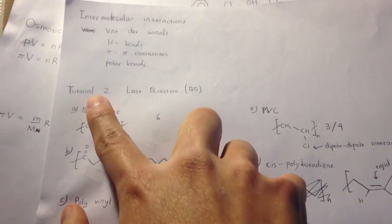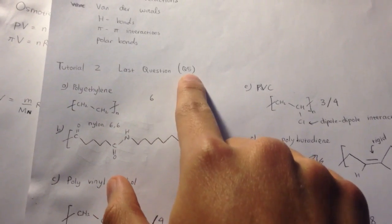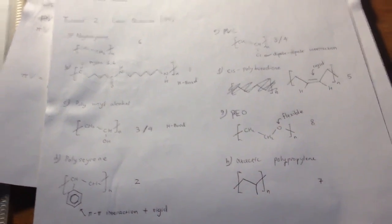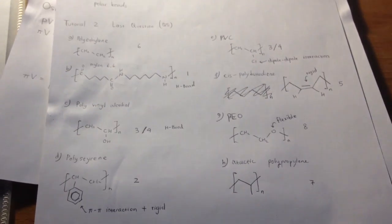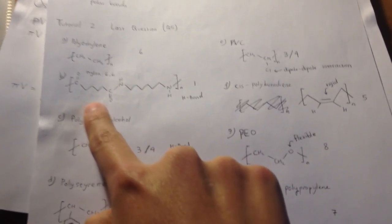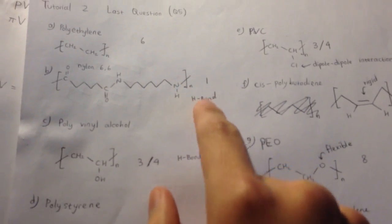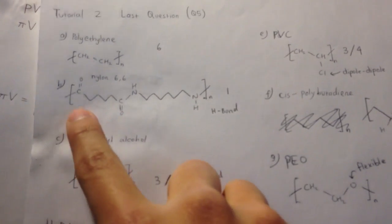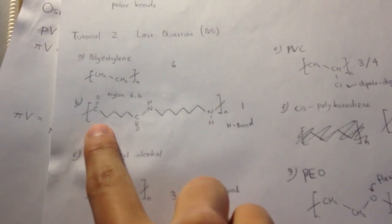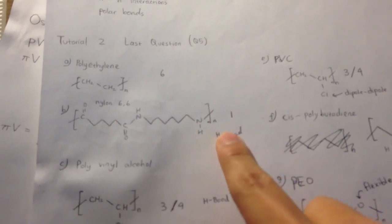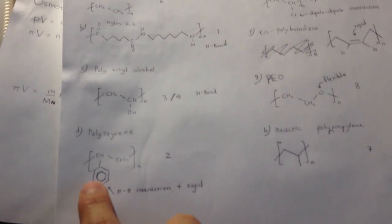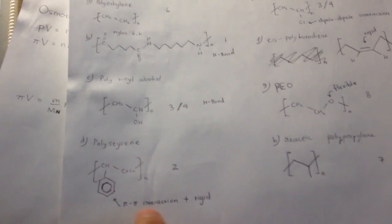And this is about tutorial 2, last question, question number 5. Nylon is the highest. The question asks for the TG, which one is higher, which one is lower. Rank them. So nylon would be the first because of hydrogen bond. And then the second would be polystyrene because of the benzene, pi-pi interaction and rigid.